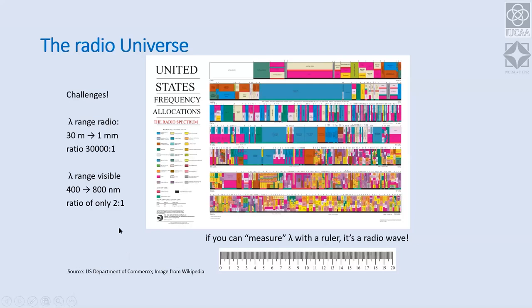Radio waves span roughly 30 meters down to about a millimeter in wavelength — a ratio of about 30,000 to one, compared with only a factor of two in the optical. In spite of this huge window, there is enormous demand for radio frequencies: mobile phones, television, aeronautics, and other communications all compete for the same spectrum. This chart of US frequency allocations shows how heavily contested different regions of the electromagnetic spectrum are.